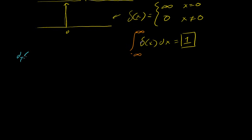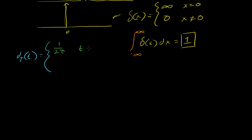This is all just to give better intuition for how the Dirac delta function can be constructed. Let's say d sub tau is a function of t — since everything in the Laplace transform world is a function of t. So d sub tau of t equals 1 over 2 tau when t is less than tau and greater than minus tau, and it's 0 everywhere else.